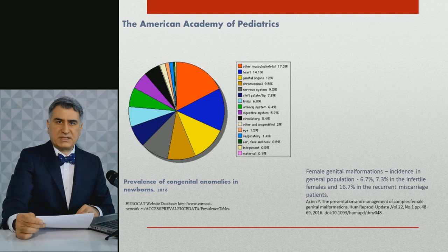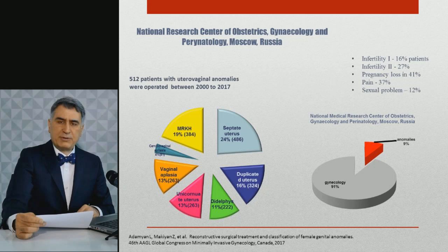The American Academy of Pediatrics reported that four percent of all newborns have congenital abnormalities. Incidence of genital malformations was 12%, which takes third position after heart and limb defects. In our Department of Operative Gynecology, surgeries of genital anomalies reached up to 9%. The anomalies were diagnosed with ultrasound, MRI, and verified during laparoscopy.